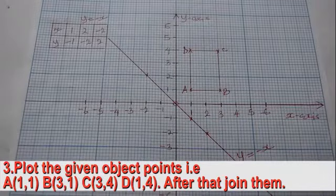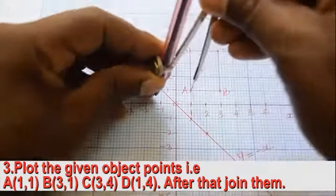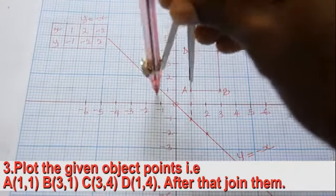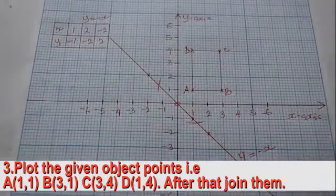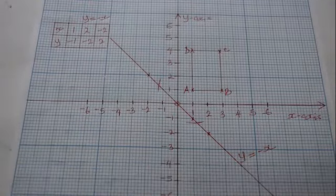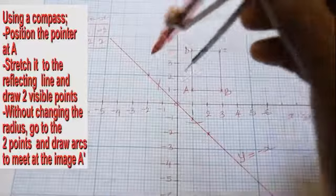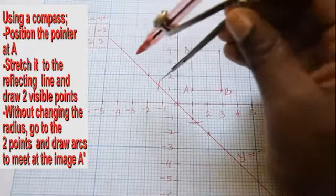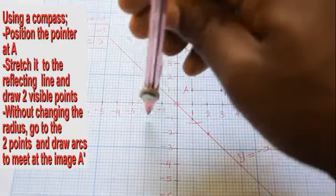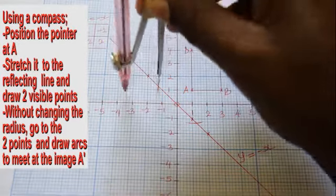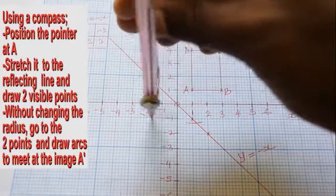Pick your compass and position it at the object point. Stretch the radius of the compass and cut the mirror line at two different points with visible crosses. Without changing the radius, lift the compass and position it onto one of the crosses, then make an arc on the other side of the reflection line opposite the object.